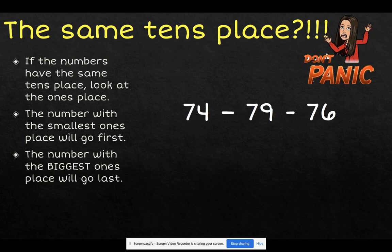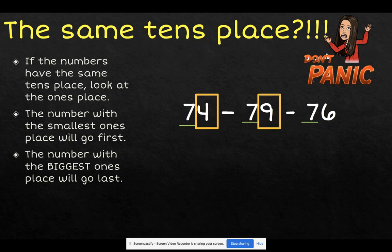For example, here we have 74, 79, and 76. We can all clearly see that all these numbers have a 7 in the tens place. So now we will look at the ones place. 74 has the 4 in the ones place, 79 has the 9 in the ones place, and 76 has the 6 in the ones place.